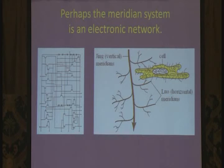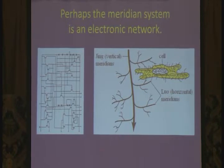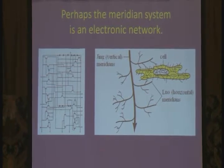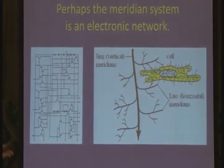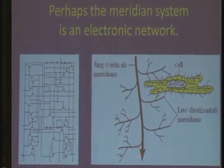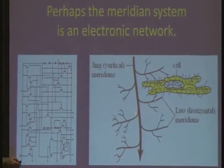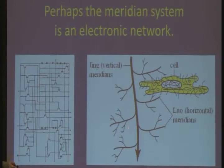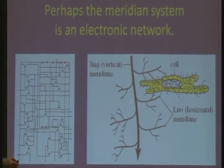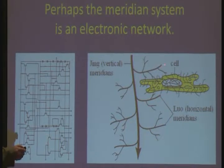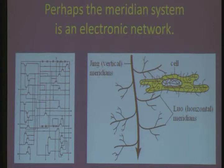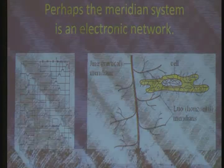This is what qi is, or one form — turns out there are many forms of qi — but one form could be electrons zipping around in the meridians. The classical descriptions are they're vertical meridians called jing and horizontal meridians called lo, and the lo meridians have branches that can touch the integrins and reach right inside of every cell, so this is an electronic network that goes everywhere in the body.